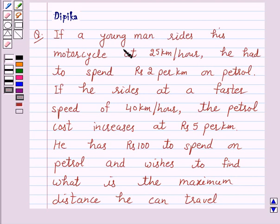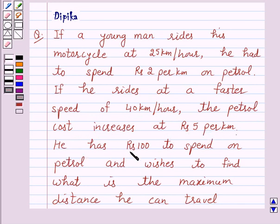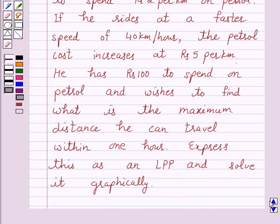If a young man rides his motorcycle at 25 km per hour, he had to spend Rs. 2 per km on petrol. If he rides at a faster speed of 40 km per hour, the petrol cost increases to Rs. 5 per km. He has Rs. 100 to spend on petrol and wishes to find the maximum distance he can travel within 1 hour. Express this as an LPP and solve it graphically.